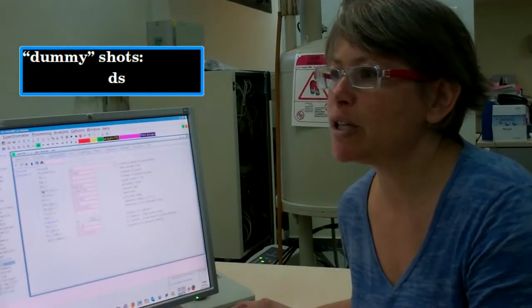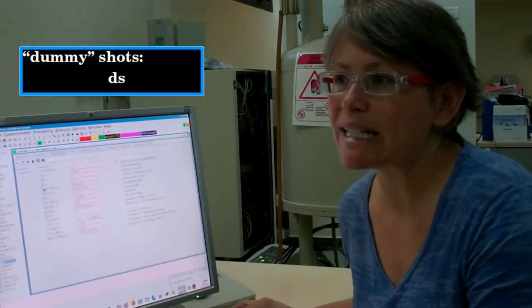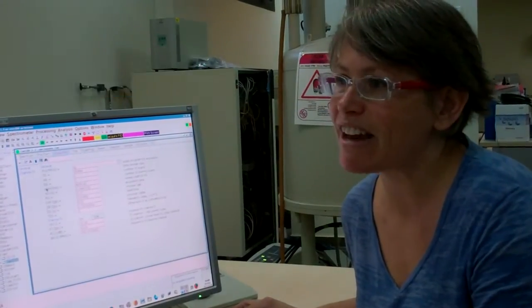DS stands for dummy shots, which is how many times we want to run the entire Pulse Acquire experiment without saving the FID.